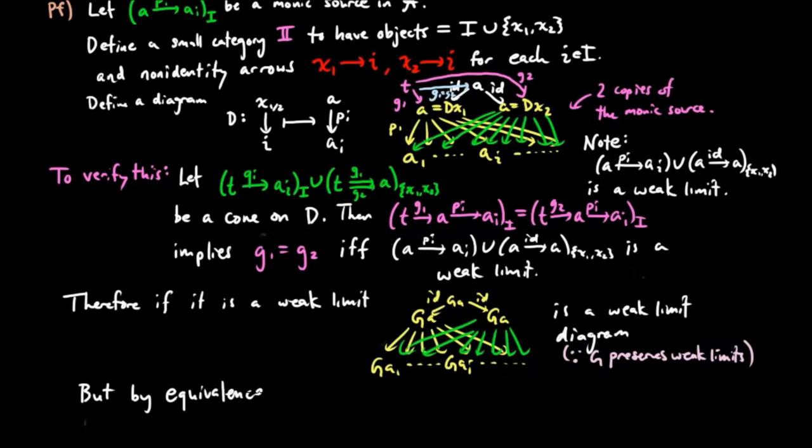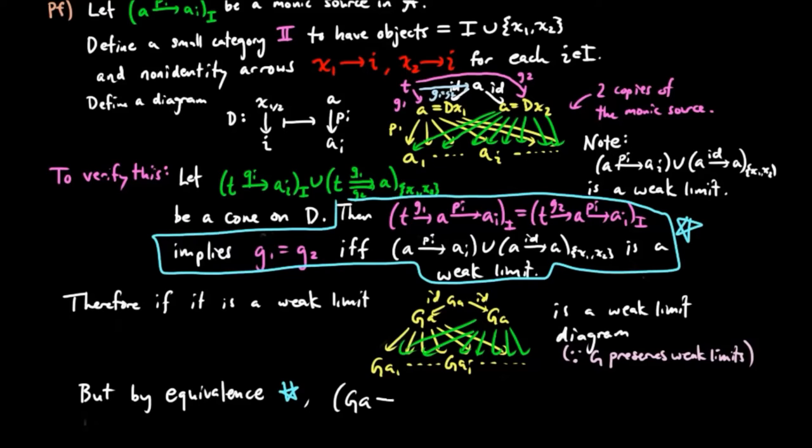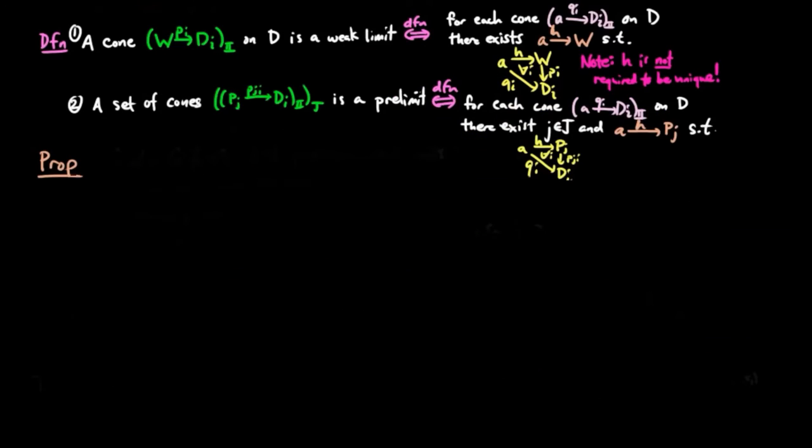But by our observation above, this implies GPI is a monic source and that completes the proof. This leads us to the following result.